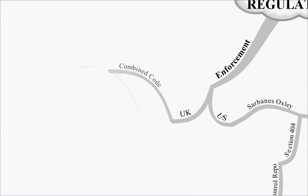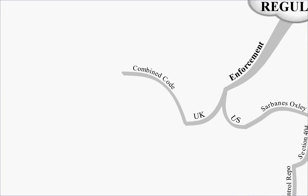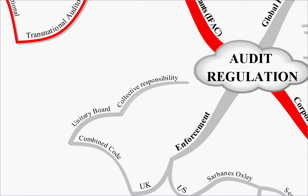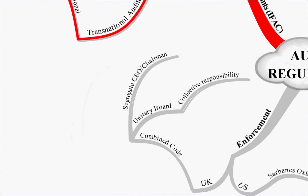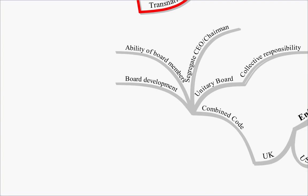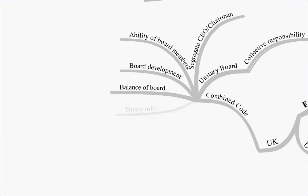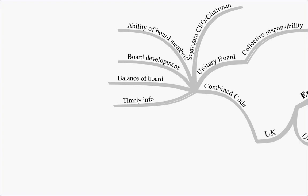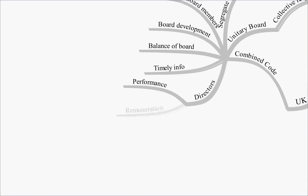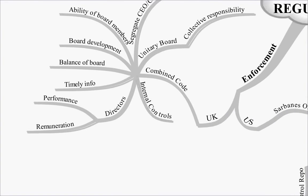In the UK we have the Combined Code. Key points include: it uses a unitary board with collective responsibility; there is a separate CEO and chairman to separate powers; board members must have sufficient ability; there must be terms set out for board development and balance; timely information must be produced; directors must have their performance evaluated and remuneration disclosed; and there must be sufficient internal controls.